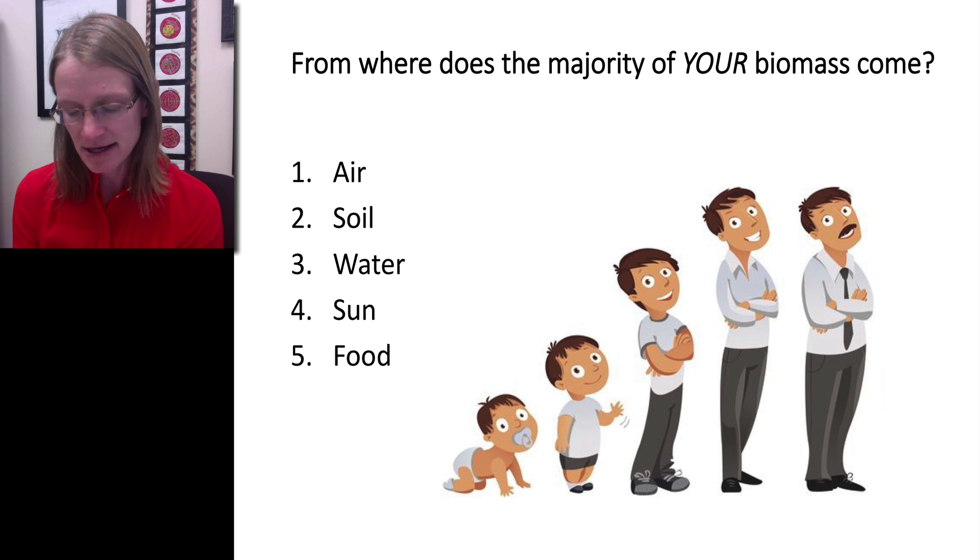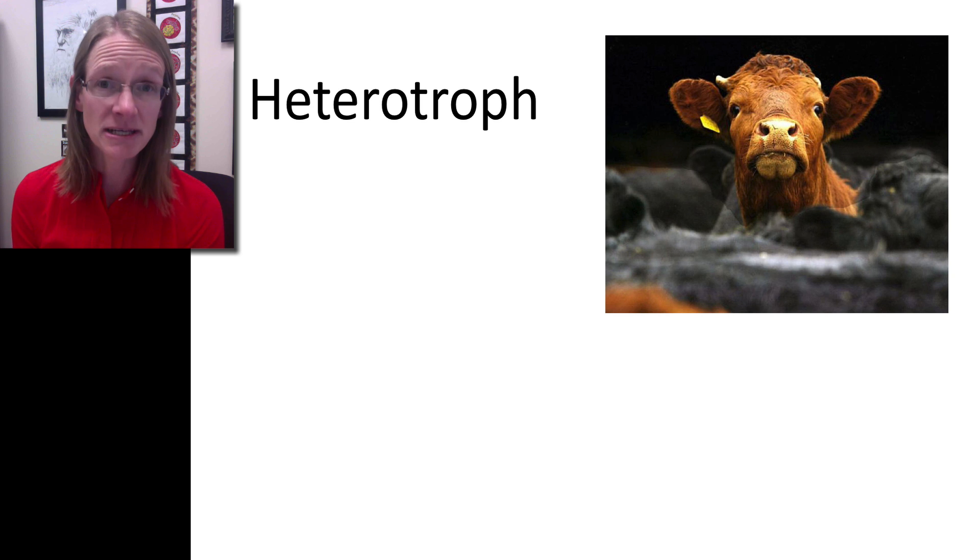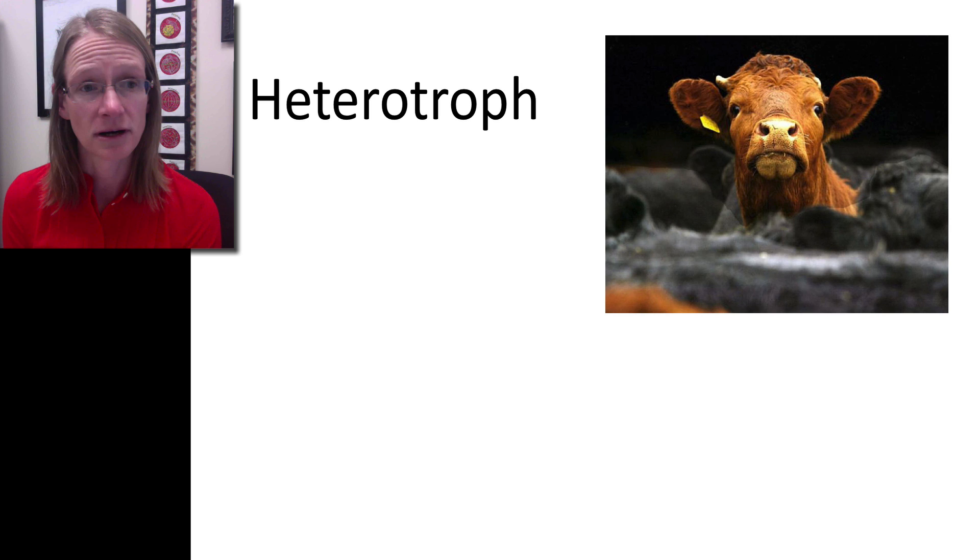That leads us to thinking about how organisms get their energy. We can take all organisms on Earth and put them into two categories. The first category are heterotrophs. Hetero literally means different, and troph refers to nourish or nutrition. Organisms that are heterotrophic get their nutrition from something else—they have to eat something else. That includes animals, fungi, and many bacteria.